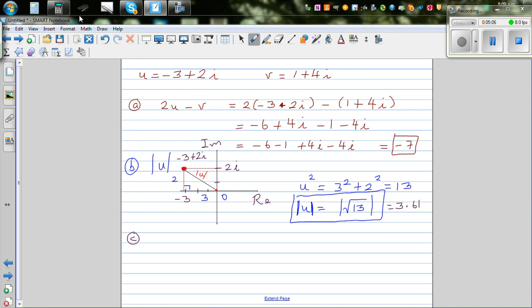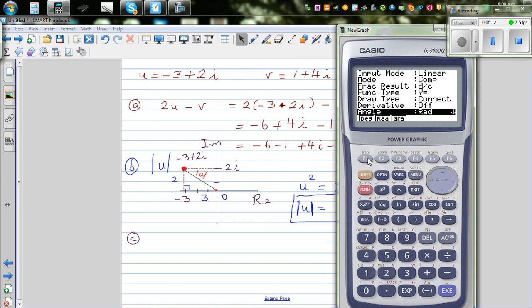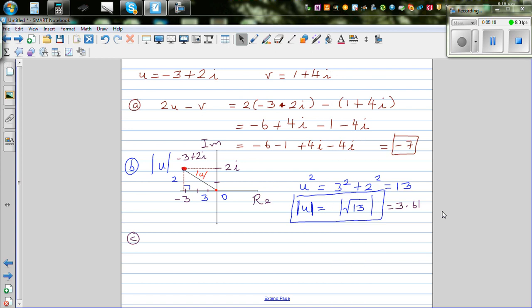This is in radians. Let me write this in degrees. Go to your settings, this is in radians, I want to write this in degrees. Sorry, 3.61 is fine. I was getting confused with argument.